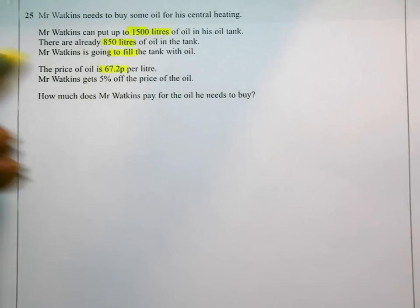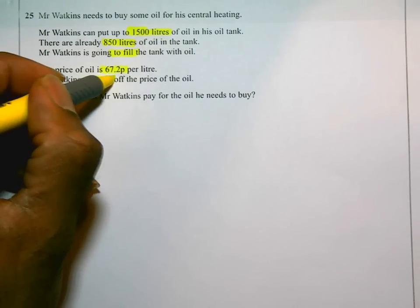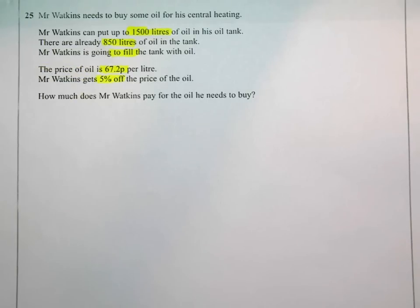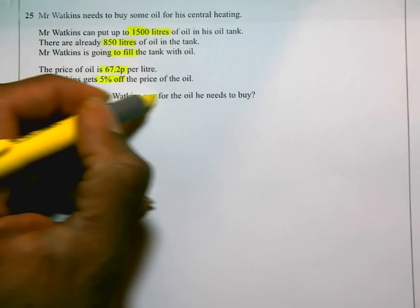So for every litre it's going to cost him 67.2 pence. Mr Watkins gets 5% off the price of the oil. So he's going to get a 5% discount. How much does Mr Watkins pay for the oil he needs to buy?